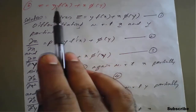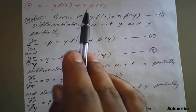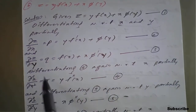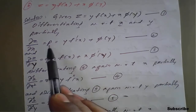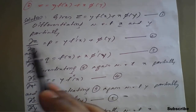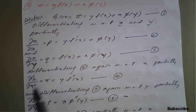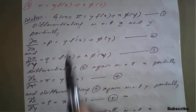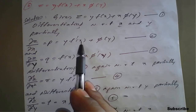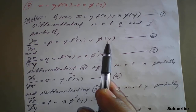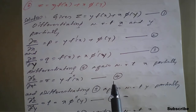Because f and phi are two functions, we have to differentiate again equations 2 and 3 with respect to x and y partially. Differentiating equation 2 again with respect to x, it will become dou square z upon dou x square, symbolically called r, equal to y into f double dash of x. Phi of x is constant with respect to x, so that term is 0. This gives equation number 4.